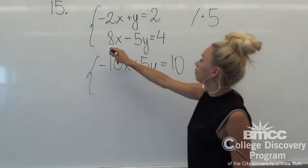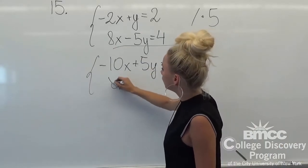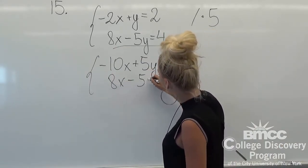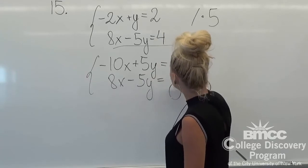And our second one just stays the same. 8x minus 5y is equal to 4.